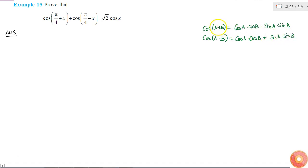Here if I put a is equal to pi by 4 and b is equal to x, I can expand these two trigonometric functions. Then what will I get? Cos pi by 4 into cos x minus sin pi by 4 into sin x. This is cos pi by 4 plus x.